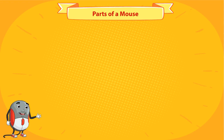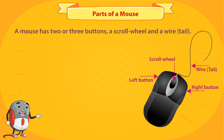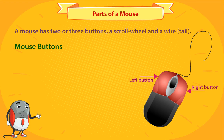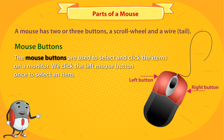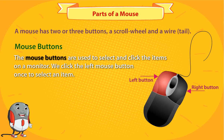Parts of a mouse. A mouse has two or three buttons, a scroll wheel, and a wire. The mouse buttons are used to select and click the items on a monitor. We click the left mouse button once to select an item.